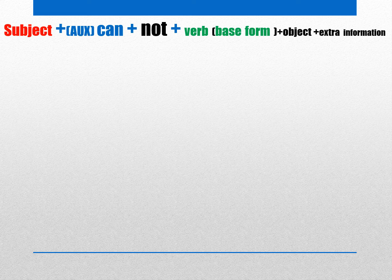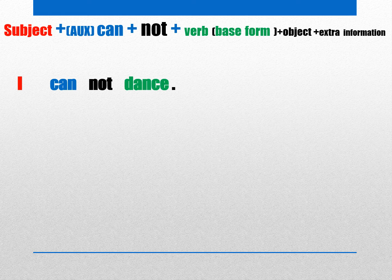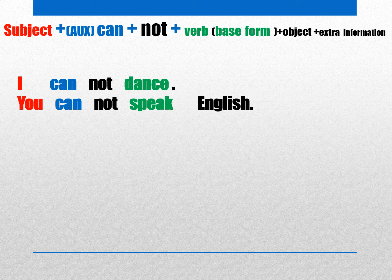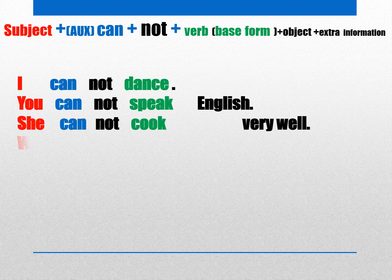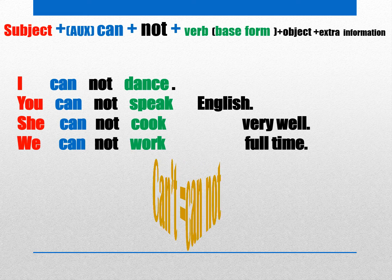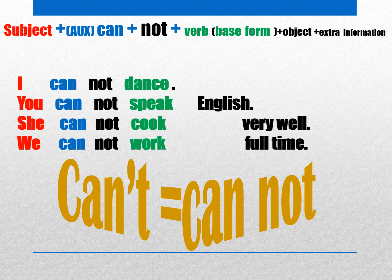So for the negative form, as usual, we put 'not' after 'can' as an auxiliary. فرمول: subject، auxiliary (can)، not، verb، object، extra information. For example: 'I cannot dance.' 'You cannot speak English.' 'She cannot cook very well.' 'We cannot work full time.' یه نکته مهم: contraction و مدل خلاصه‌ی 'cannot' همون 'can't' میشه — اما British‌ها 'can't' می‌گن. I can't dance or I can't dance.